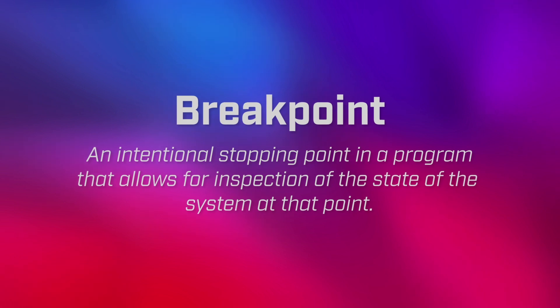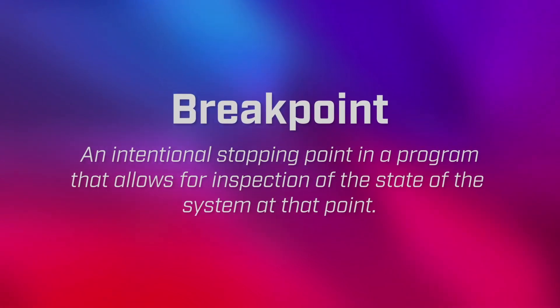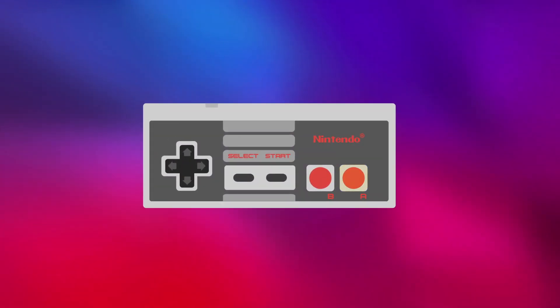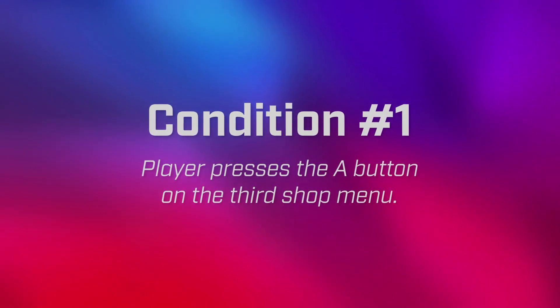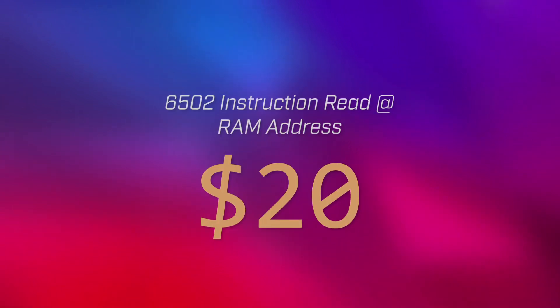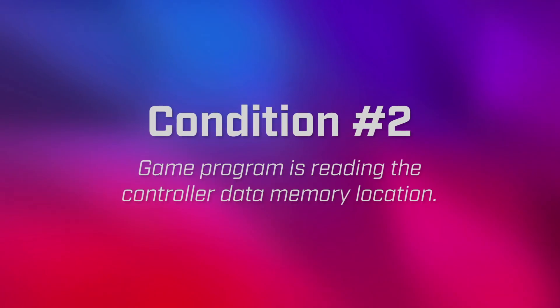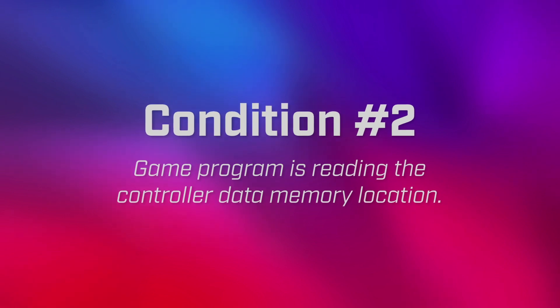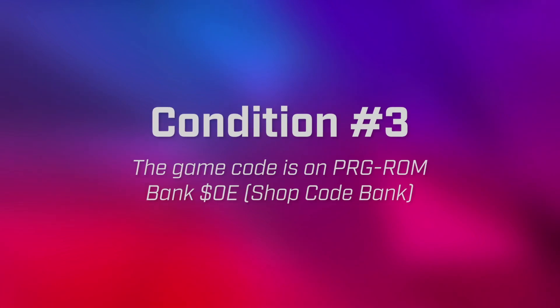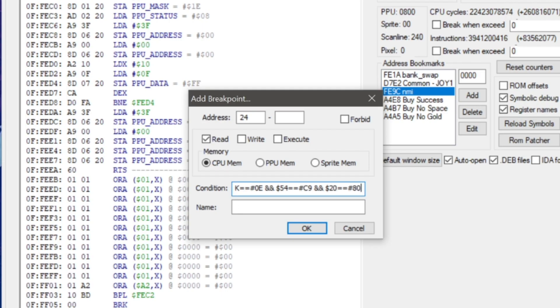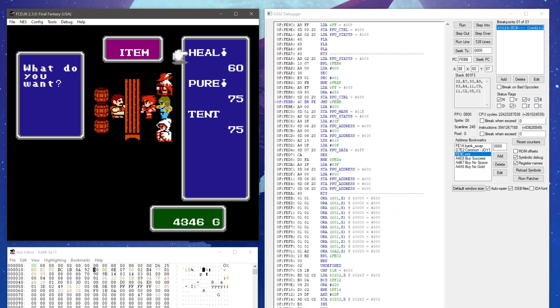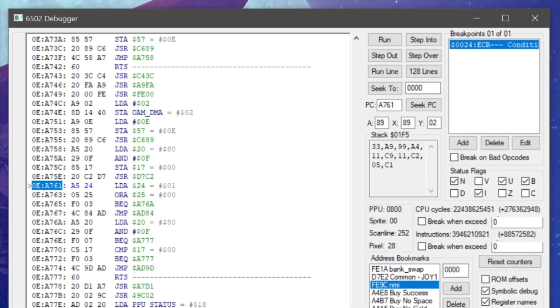The idea was to combine this information and build a breakpoint that would only pause the game if three very specific conditions were met. First, the A button on the controller was being pressed while the game was displaying the third menu. Second, the game was currently processing an instruction that was attempting to read the state of the controller — this is how the game would detect whether it needed to run the code we were trying to find. And finally, that instruction resided on bank 0E, meaning it was likely part of the shop code. I added the breakpoint and then attempted to buy an item, which triggered the debugger to pause execution of the game.